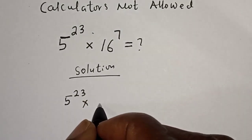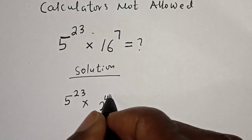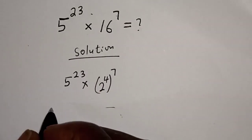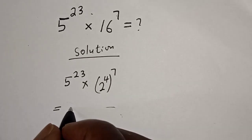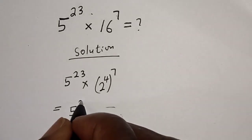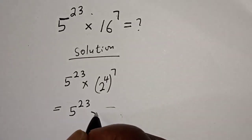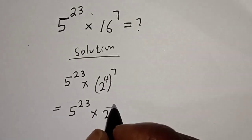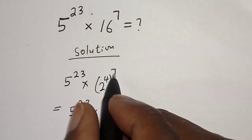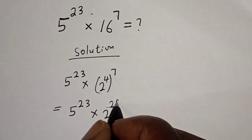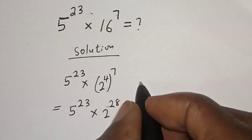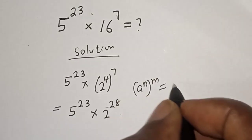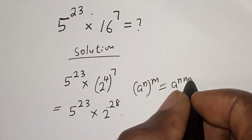16 can be written as 2 raised to power 4, so 16 raised to power 7 becomes 2 raised to power 4, then raised to power 7. This is equal to 5 raised to power 23 multiplied by 2 raised to power 4 times 7, that is 28. This follows the rule that a raised to power n, raised to power m, is equal to a raised to power n times m.